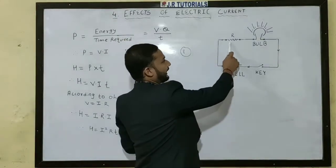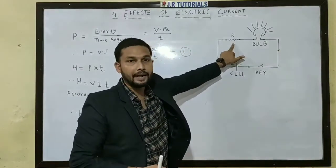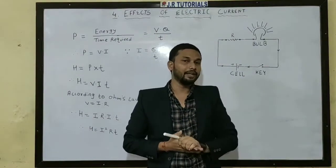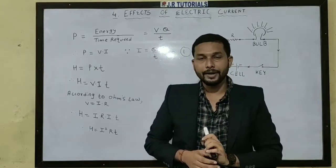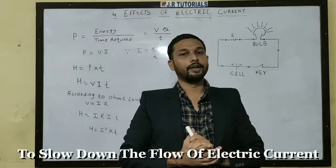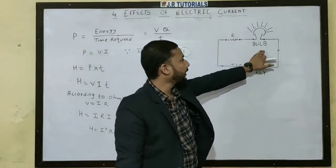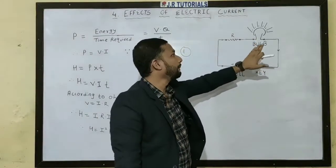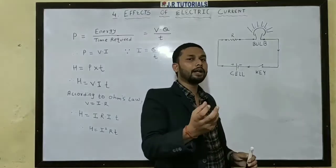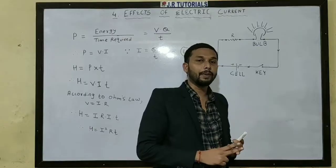First of all, you will see here there is a resistance, which is denoted by capital R. What is resistance? The basic function of resistance in an electric circuit is to slow down or to stop the flow of current in the circuit. Here we also have the electric bulb. If it glows, then we can see that current is passing through the circuit. If it does not glow, then the circuit is not complete.